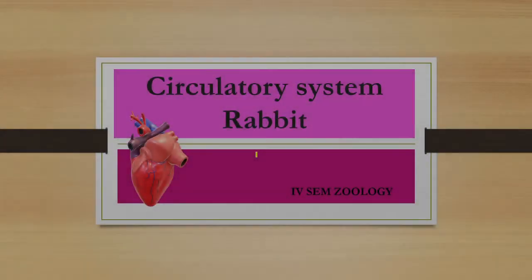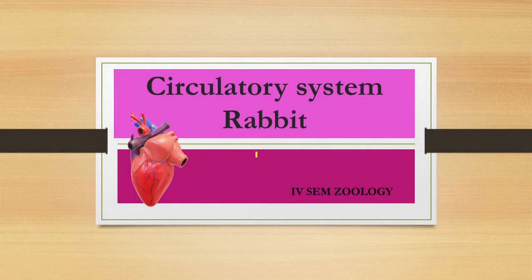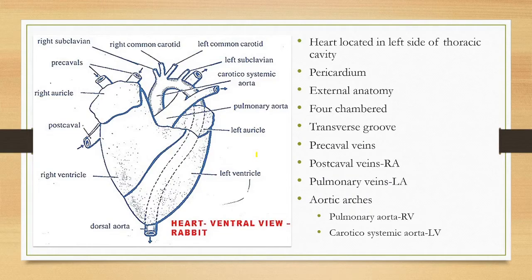The blood vascular system, or the circulating system of rabbit, consists of blood vessels and a heart. The circulating system is of closed type.